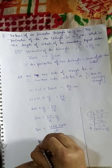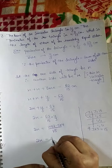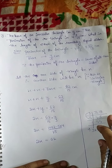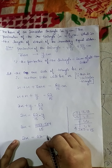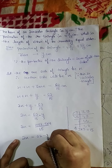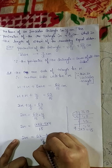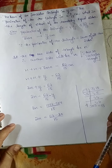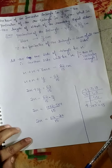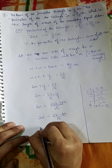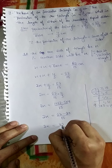Next step: 2X equals 62 minus 20 upon 15. So 2X equals 42 upon 15.